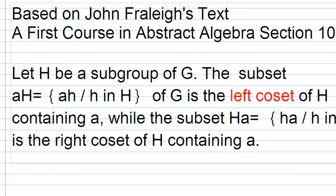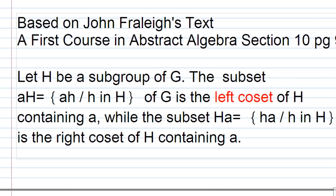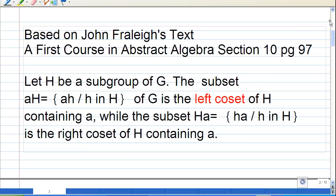To do this, first you must understand what a coset of a subgroup is. According to Fraleigh's text, 'A First Course in Abstract Algebra,' section 10, page 97: the subset aH, consisting of a times h for all h in the subgroup H, is the left coset of H containing a, while the subset Ha, consisting of h times a for all h in H, is the right coset of H containing a.